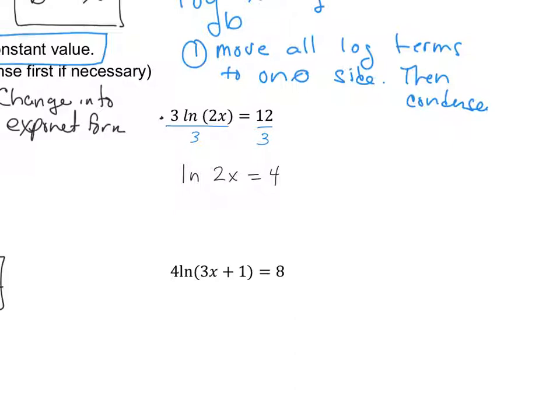By doing that, I now have the natural log of 2x is equal to 4. The understood base with the natural log, remember, that has a base of e. That's okay. My answer can be in terms of e for this question. So now what I have is e to the 4th is equal to everything that was inside those parentheses, so it's equal to 2x. Divide both sides by 2 here. And x is in terms of e, so x is just e to the 4th all over 2.